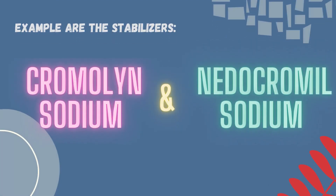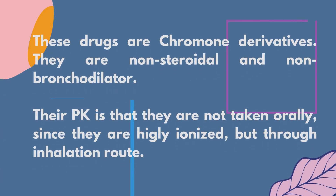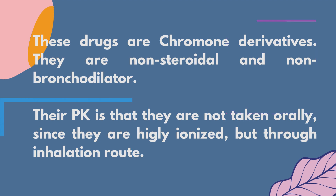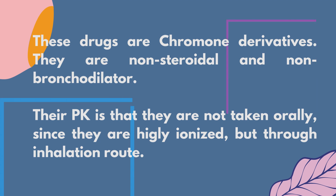Examples include cromolyn sodium and nedocromil sodium. These mast cell stabilizers are drugs that are common chromone derivatives. They are non-steroidal and non-bronchodilator. And since they are highly ionized, they are not taken orally but through the inhalation route.